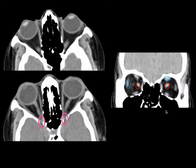For the orbits, look at the globes and check for lens dislocation. In the posterior chamber, look for hemorrhage, retinal detachment, and choroidal detachment. Look at the optic nerve and the apex of the orbit — a fracture fragment can impinge on the optic nerve. Also assess the extraocular muscles for bulk and always compare both orbits.